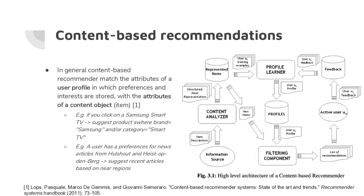Content-based recommendations — this overview is from the Recommender Systems Handbook by Ricci, Rokach et al., published in 2011, an 800-page scientific manual. For content-based recommendations, the general idea is to match the attributes of a user profile — where past preferences and interests are stored — with the attributes of a content object.